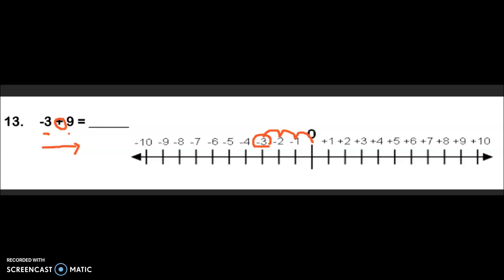Now we also know that we still have that 9. Our 9 is positive. There's no negative sign by it. So we know when we're dealing with positive numbers, we travel to the right of the 0. So that's what we're going to do now. We're going to take our -3 and add 9 positive leaps to it going to the right.